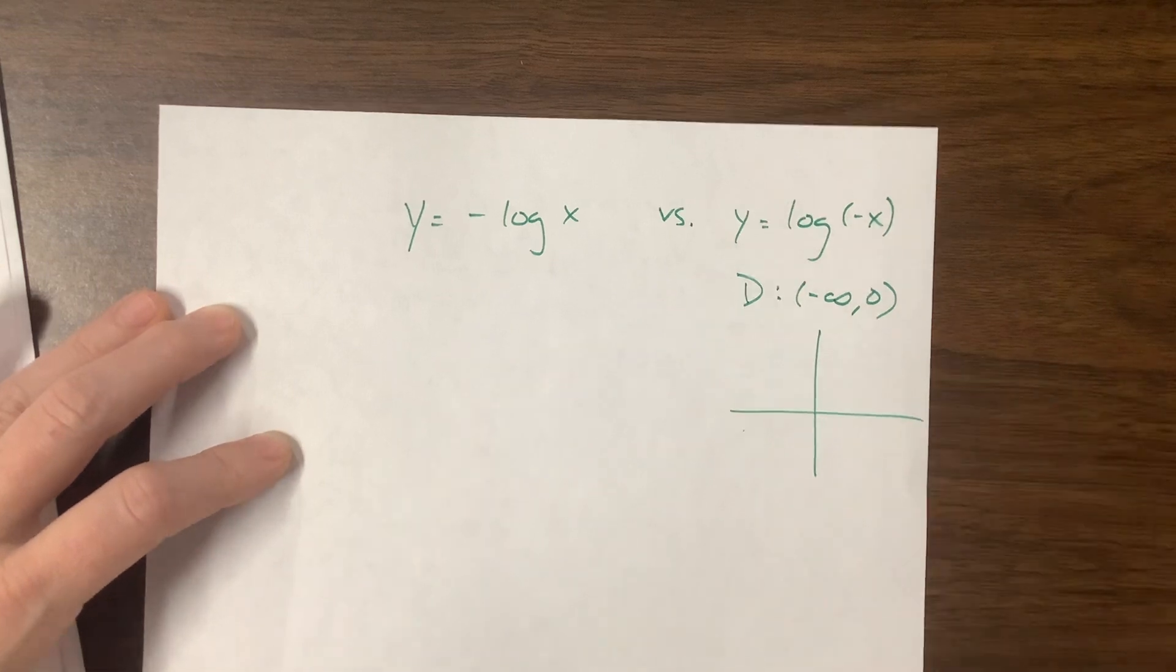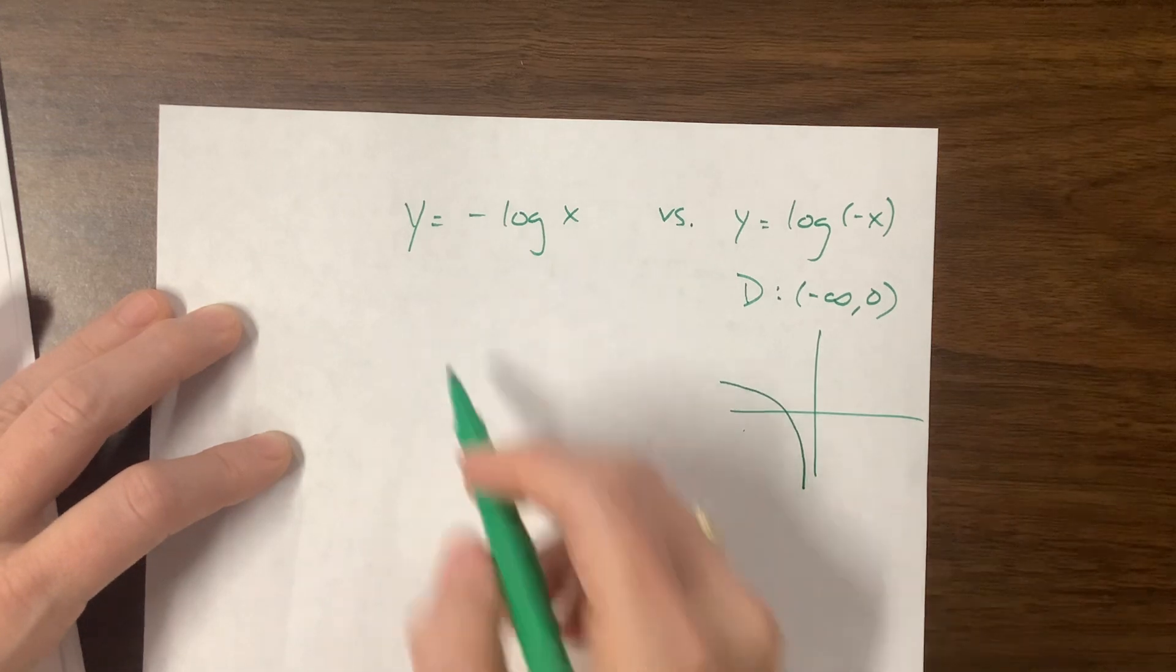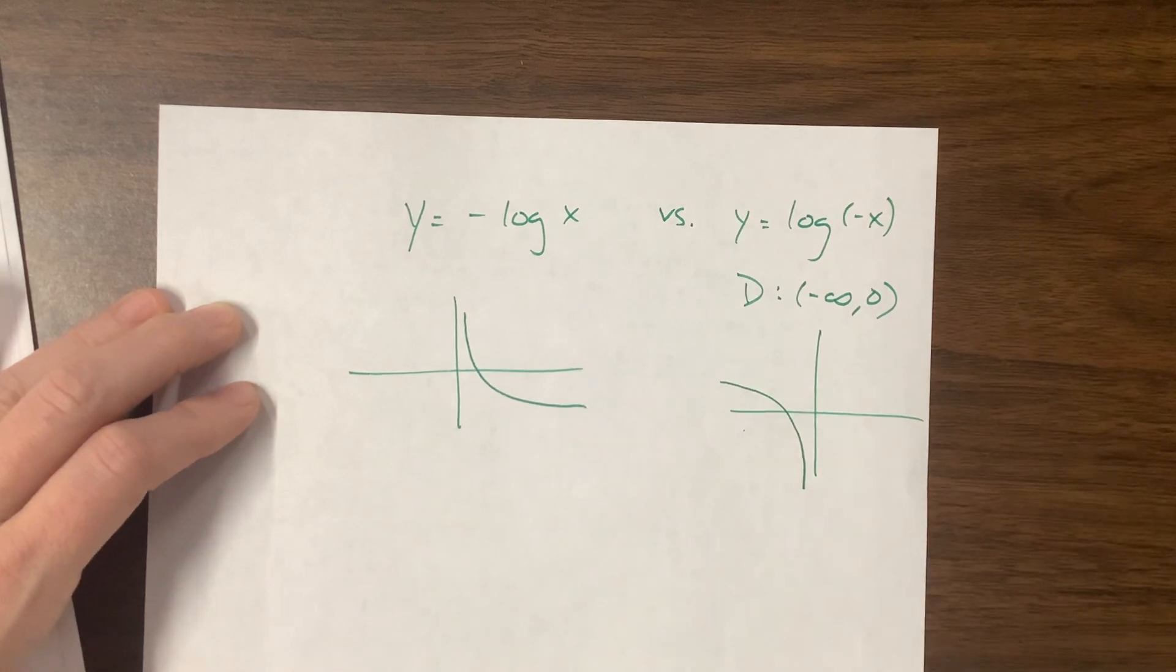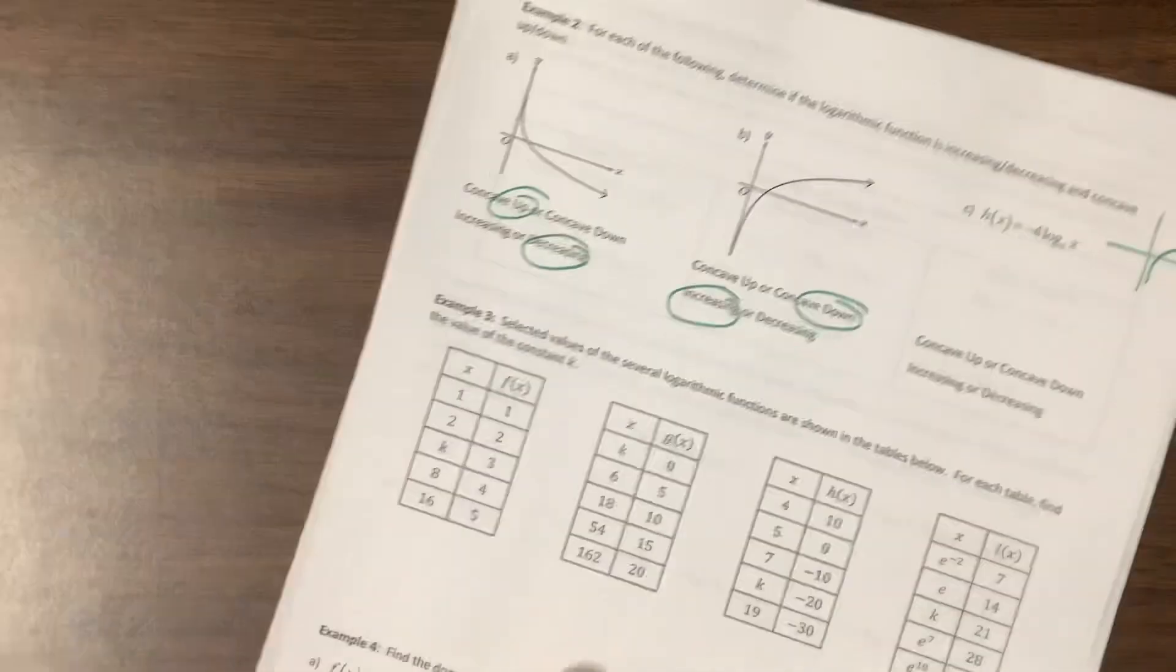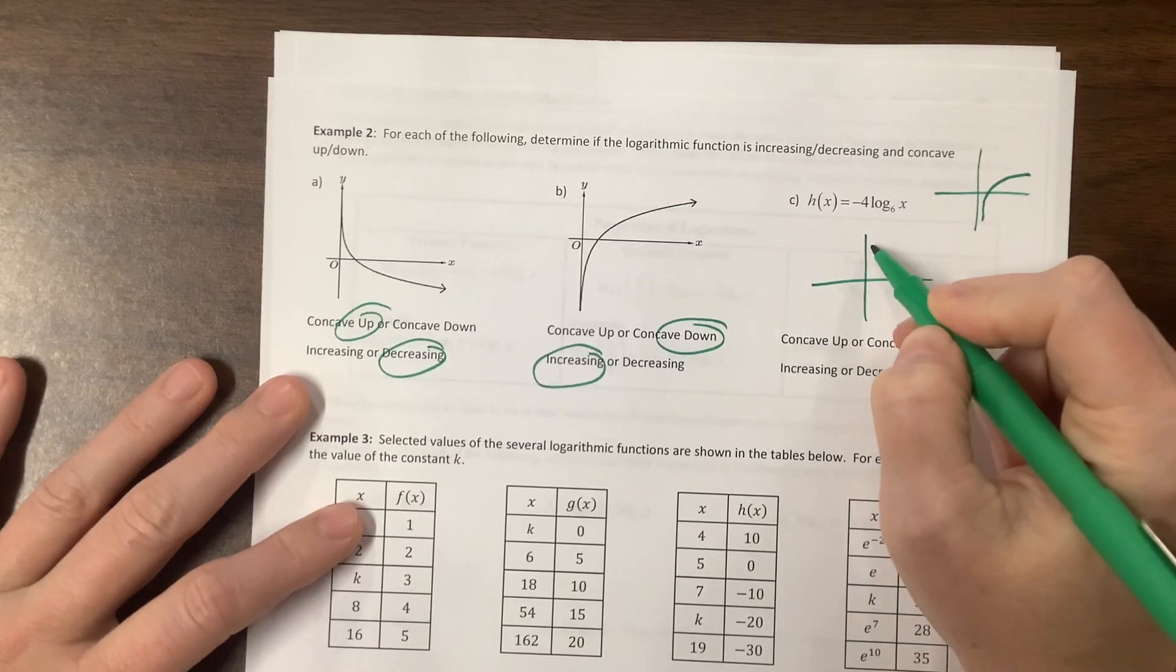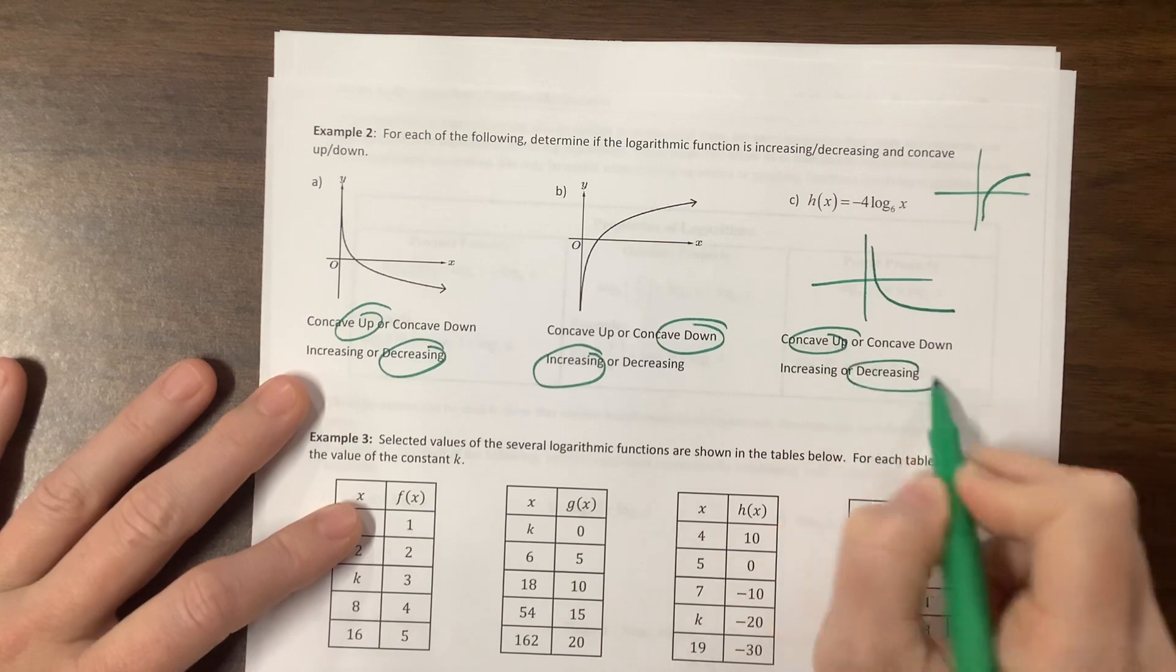So my parent function that normally goes like this has reflected and will go something like that-ish. And this one, it normally goes like this. It's now going to come and go something like that. So this, we just said reflected and looks something like this. So that's concave up and the values are decreasing.